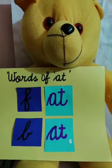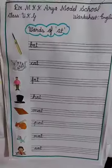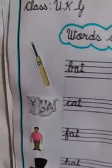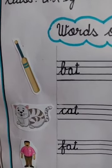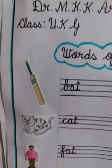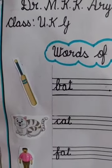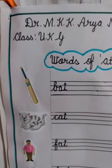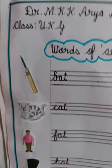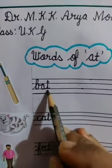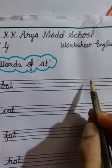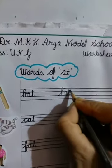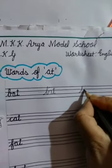Now we will do more words of the 'at' family. Kids, today we will write 'at' family words. First you have to see the picture — tell me the name of this picture. Yes, bat. Do you know? A bat is used for hitting the ball in some games, like cricket. Do you like to play bat-ball? Yes. Now read it: B-at, bat. Every word you have to write two times. Now write here: bat.